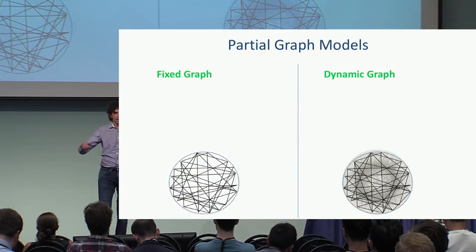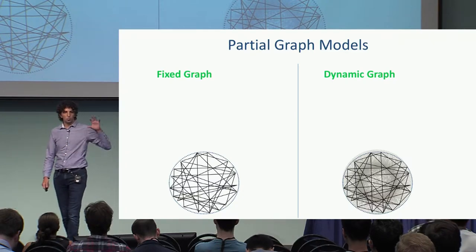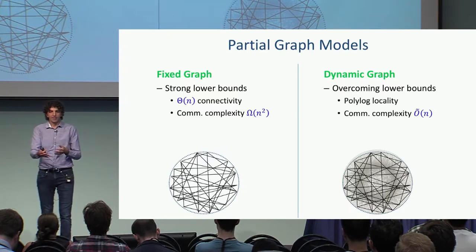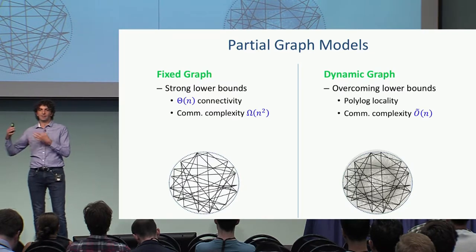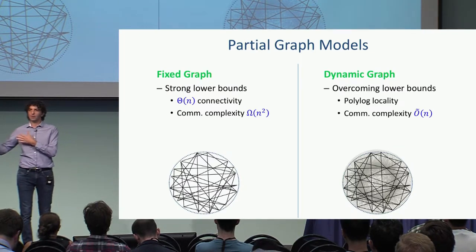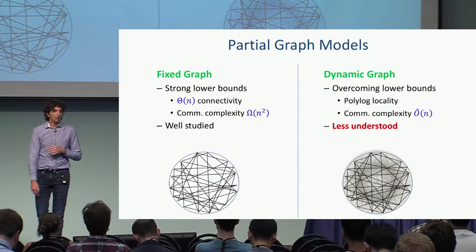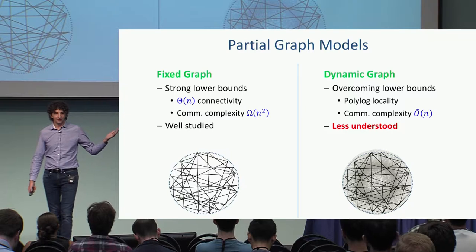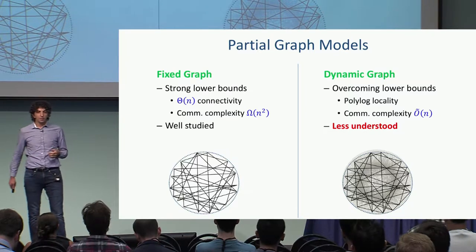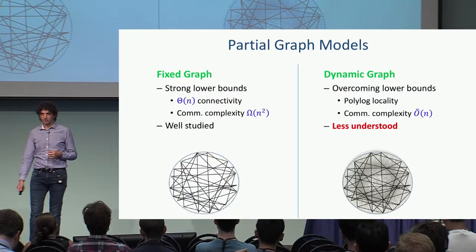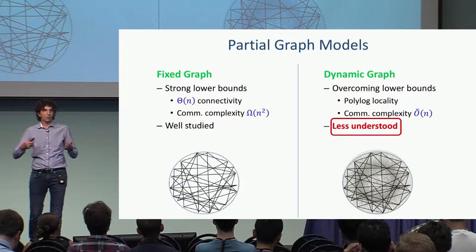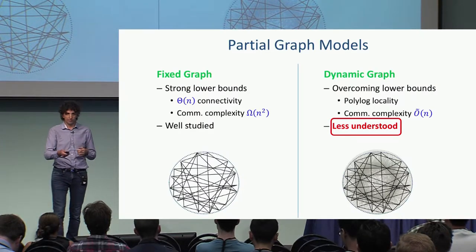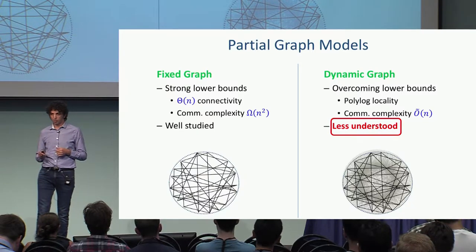To compare these two models: in the fixed graph, most results are lower bounds; in the dynamic setting, we actually get many upper bounds. The fixed graph has been studied since the 80s and is well understood. That's not the case with the dynamic setting — we don't understand it that well, and that's what we try to contribute in this work: a better understanding of this model.